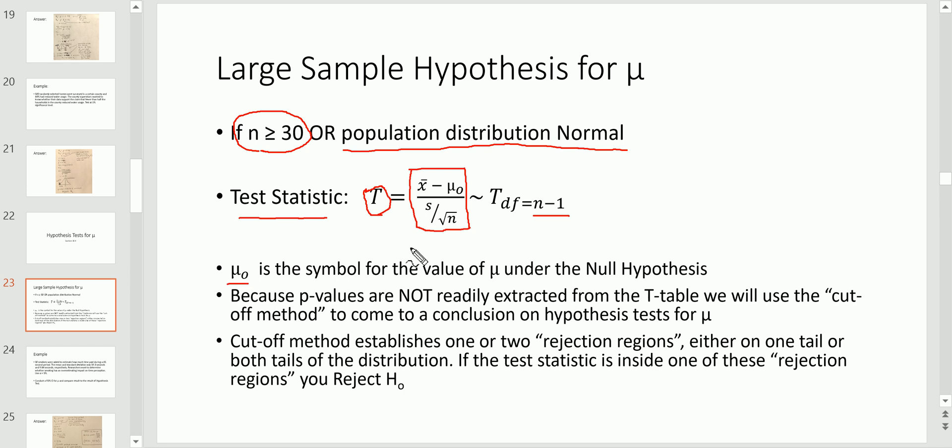Just a word on the symbol I'm using here: mu zero is just the value for mu under the null hypothesis. Recall that the null hypothesis is the value for the population parameter being tested that we initially assumed to be true. This value comes straight from the null hypothesis.